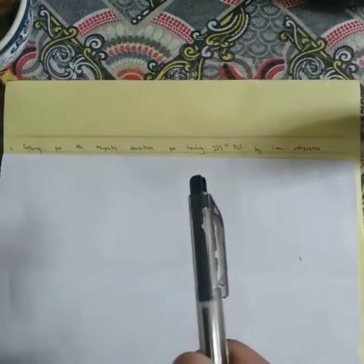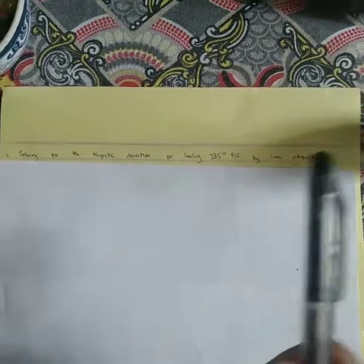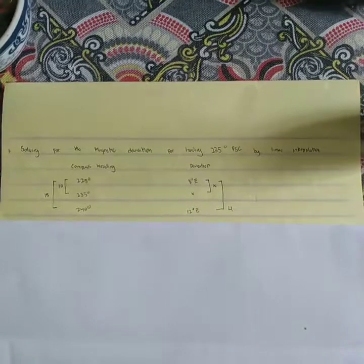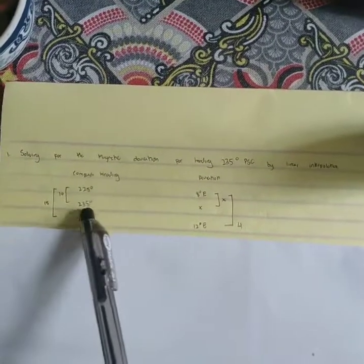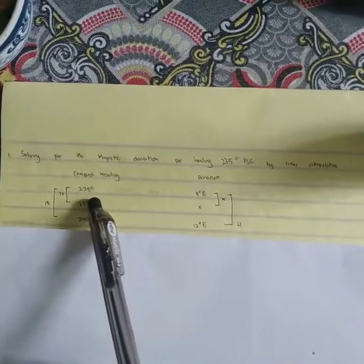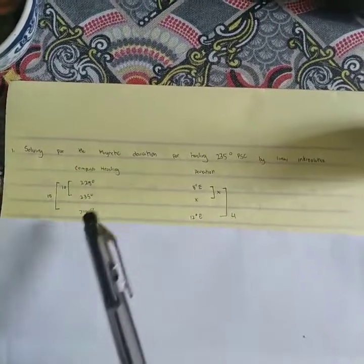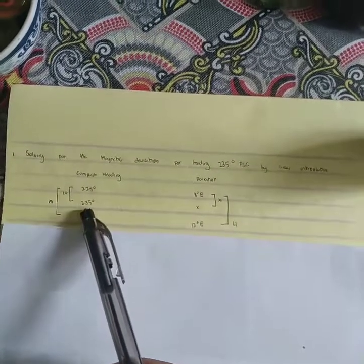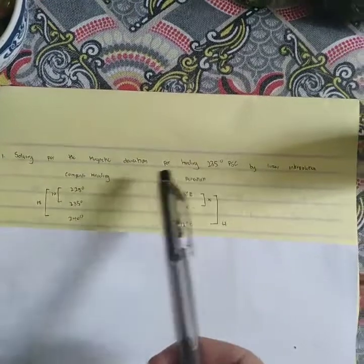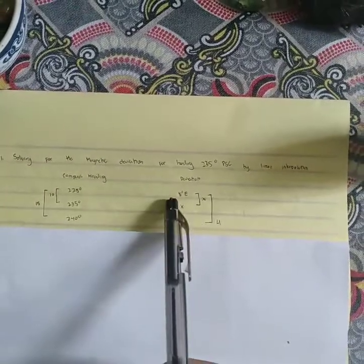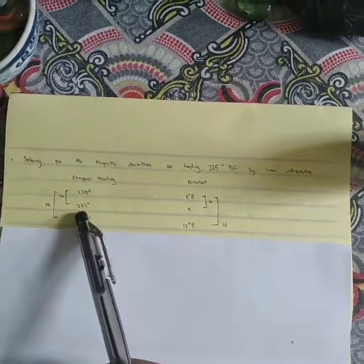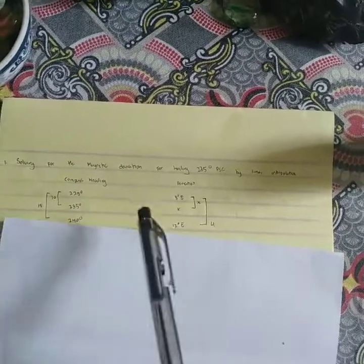This is number one: solving for the magnetic deviation for heading 235 degrees PSC by linear interpolation. We must write down compass heading 225 degrees and 240 degrees, because 235 degrees falls between them. The deviation for 225 degrees is 8 degrees East. For 235 degrees, the deviation is unknown — mark it as X. The deviation for 240 degrees is 12 degrees East.